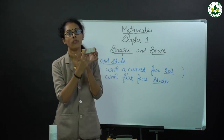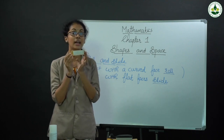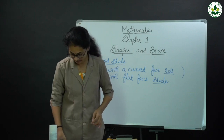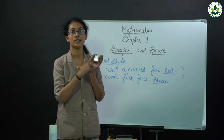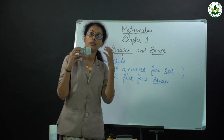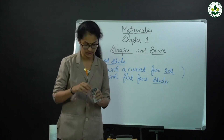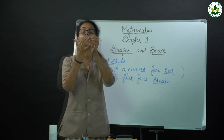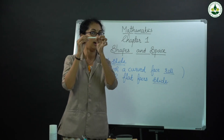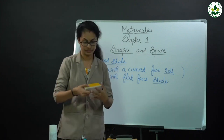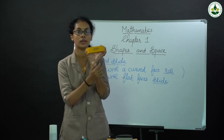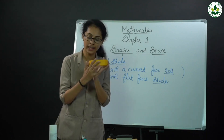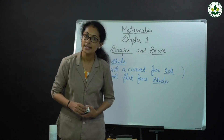This is a flat face, so this one is a sliding object. Then this chalk box — what type of surface? Flat surface. So it is a sliding object. Then this chalk — what type of face? This is curved face, so this one is a rolling object. Then another one — this duster. What type of surface? Flat face. So it can slide. These are the differences between rolling objects and sliding objects.